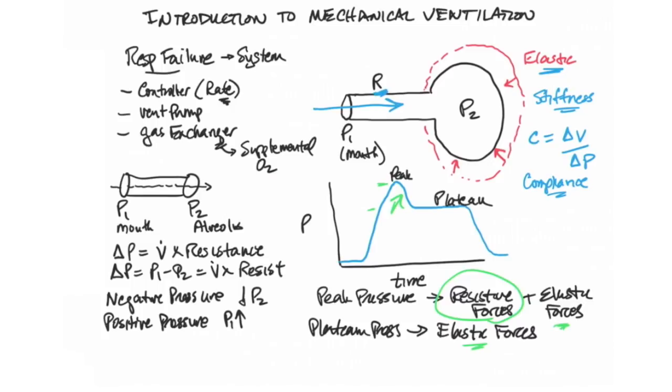If I have high elastic forces, a very stiff lung or stiff chest wall, both the peak and the plateau pressures would be elevated. And the differential between the two of them would stay the same. So if I'm having problems with high pressures on the ventilator, as I push air in with a positive pressure ventilator, I have to distinguish whether this is affecting primarily the peak pressure or primarily the plateau pressure, to understand better whether or not I'm dealing primarily with a resistive problem or with an elastic problem in the system.